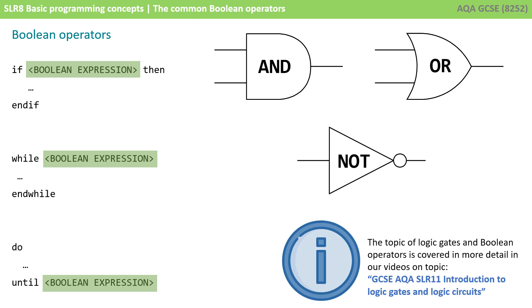Now you might already be aware that these Boolean operators AND, OR, and NOT that you can use in the Boolean expressions of selection and iteration statements also have matching logic gates. We're going to be studying that in more detail along with the extra logic gate you need to know about for GCSE, XOR, in the topic SLR 11.